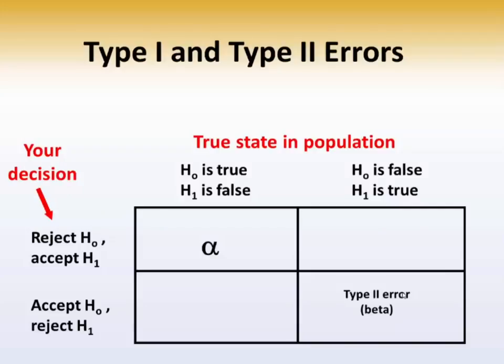Remember the type 1 and type 2 error slides we showed in the previous video? In the upper left-hand box is when you make a type 1 error, and we labeled that as an alpha error. The probability of making a type 1 error — rejecting a true null hypothesis — is exactly whatever you set alpha at: 0.05, 0.10, or 0.01. That is your probability of making a type 1 error.